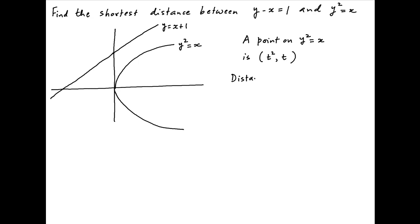The distance of this point from the line y equals x plus 1, let's denote this by P, is equal to the absolute value of t minus t squared minus 1 divided by the root of the sum of the squares of the coefficients of x and y in the equation of the line. That is root 2.